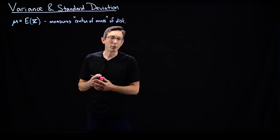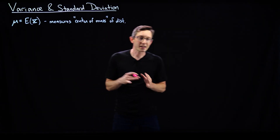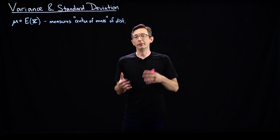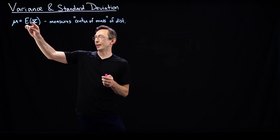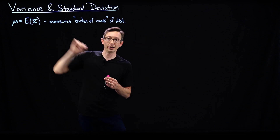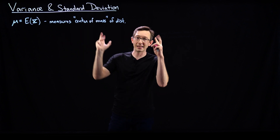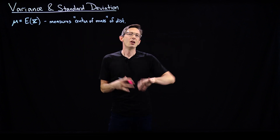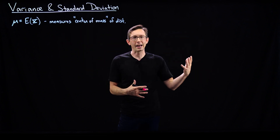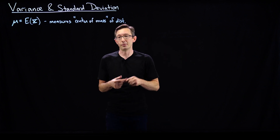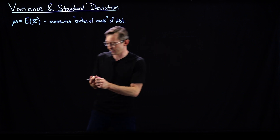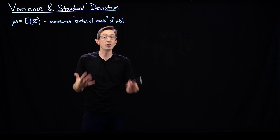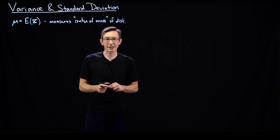Welcome back. In the last couple of lectures, we have defined the expected value of a distribution x — the expectation of a random variable x — which measures the center of mass of that distribution. For well-behaved distributions like a Gaussian, it is actually the most probable center of the distribution. Today, we're going to introduce the variance and standard deviation of a random variable x.